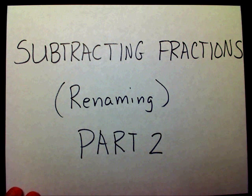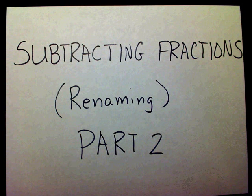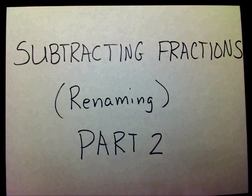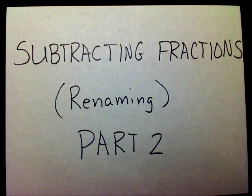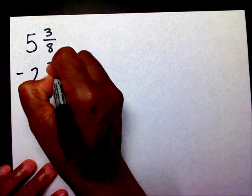This is part two of subtracting fractions by renaming. This time I have 5 and 3 eighths minus 2 and 3 fourths.